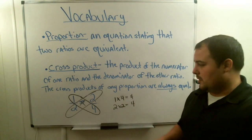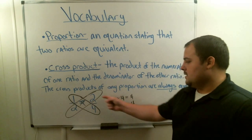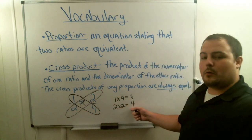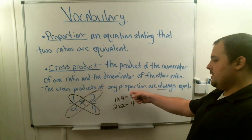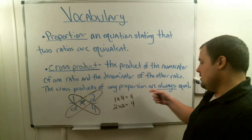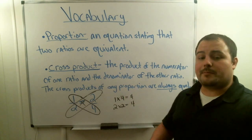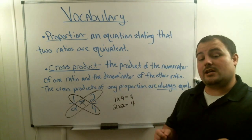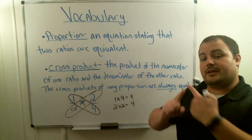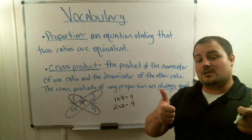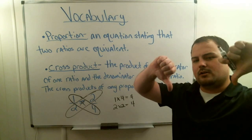1 times 4, that's 4. 2 times 2, that's 4. So since when I cross-multiplied, or did the cross-products, and they were equal, that must mean they're proportional. So we're going to be able to test if two fractions are proportional by cross-multiplying. If they give us the same answer, they're proportional. If they don't give us the same answer, they're not proportional.